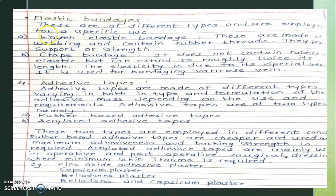The fourth classification is adhesive tapes. Adhesive tapes are made up of different types, varying in both type and combinations of adhesive mass depending on use and requirements. They are of two types: rubber-based and acrylic adhesive tapes. Rubber-based adhesive tapes are cheaper and used for general purposes, while acrylic adhesive tapes are mainly used in operative and post-operative surgical dressings where minimum skin trauma is required.